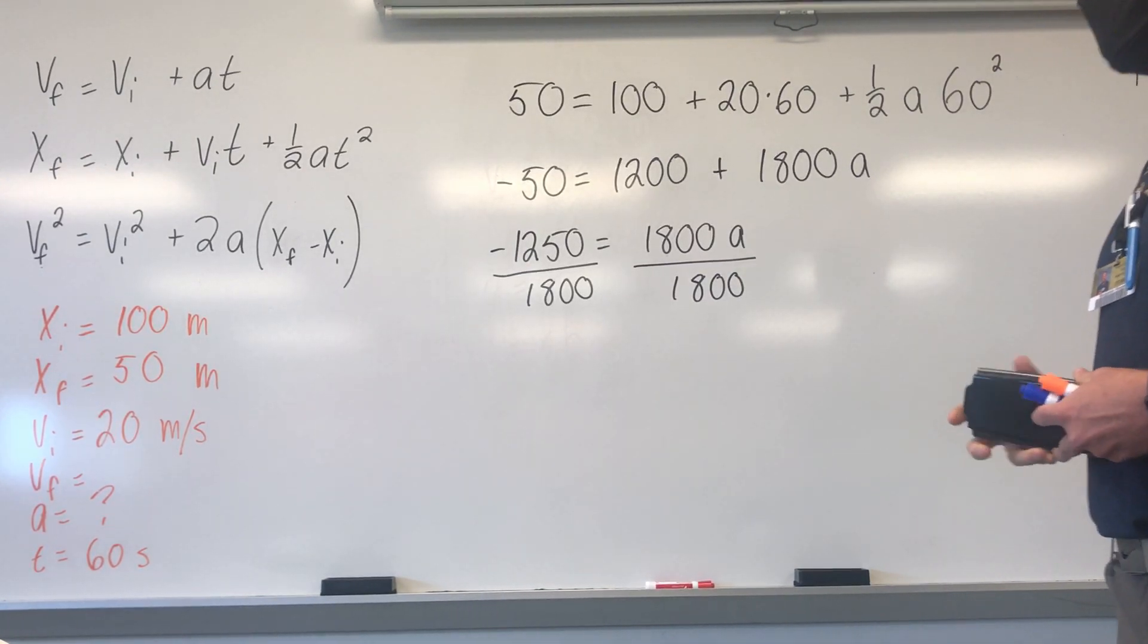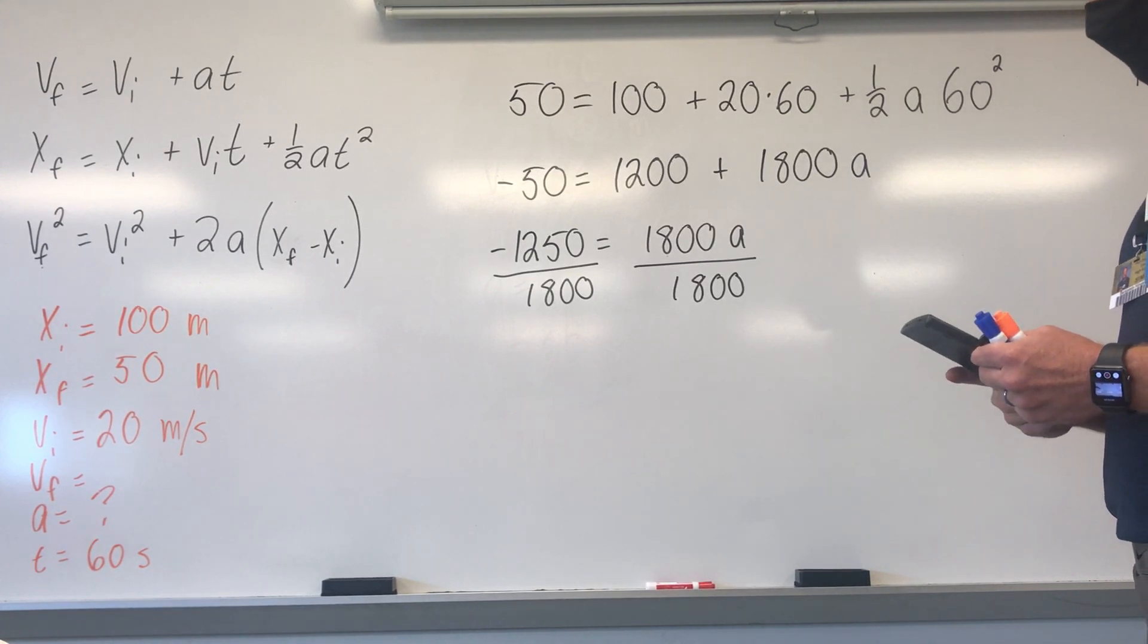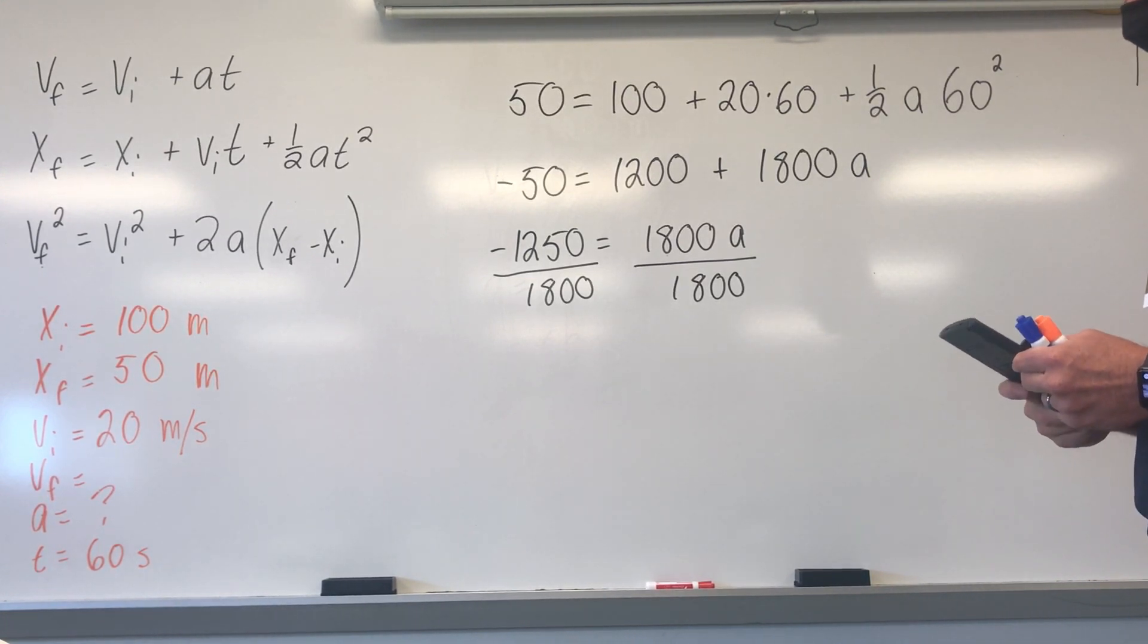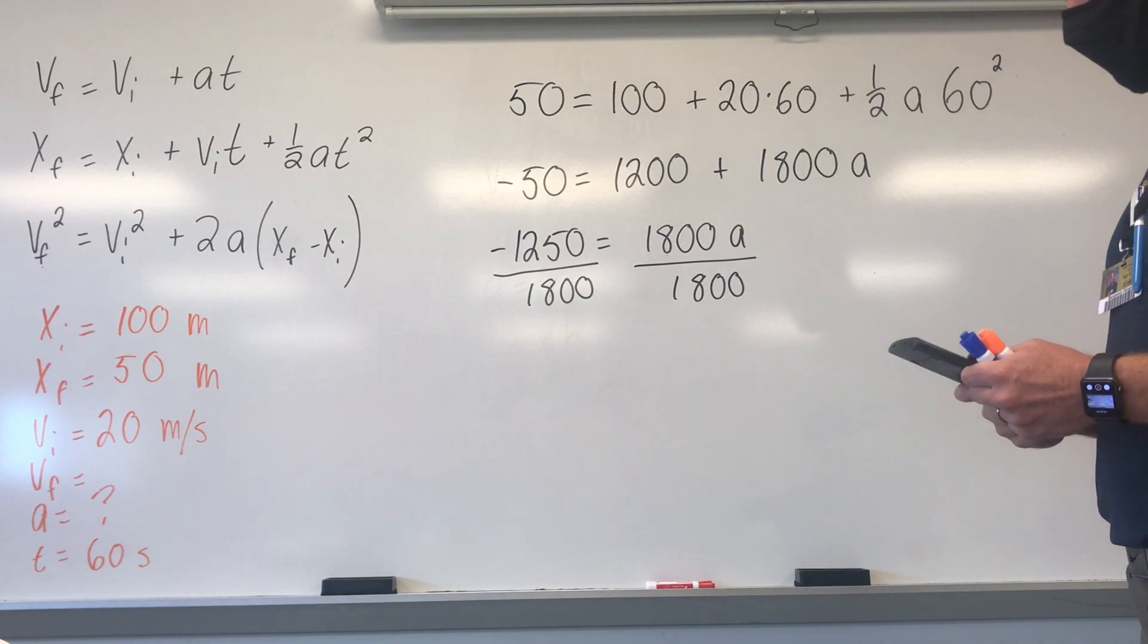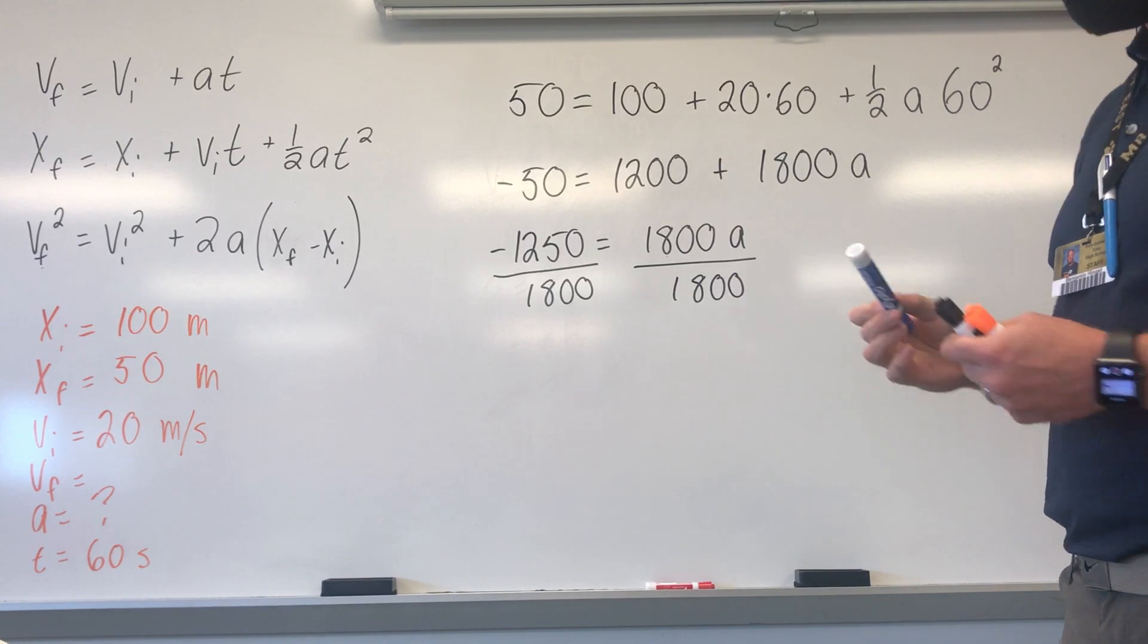So, let's pull out a calculator. So, negative 1,250 divided by 1,800, and I get negative 0.694.